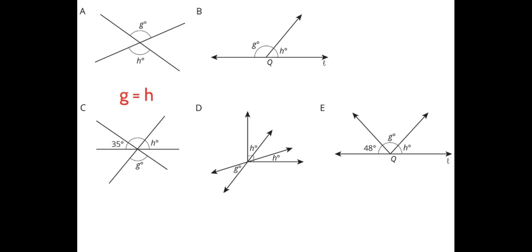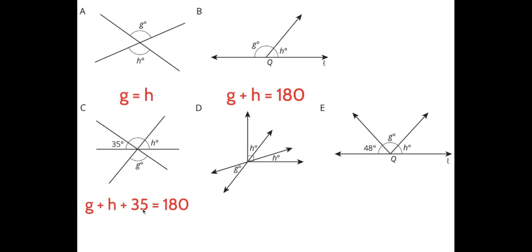Therefore those two angles are supplementary, and we write G plus H equals 180. In the next situation there's more going on. We can conclude that G plus H plus 35 equals 180. The 35-degree angle is vertical to another angle in the figure, so that angle is also 35 degrees, and then H plus that angle plus G makes one straight line of 180 degrees.